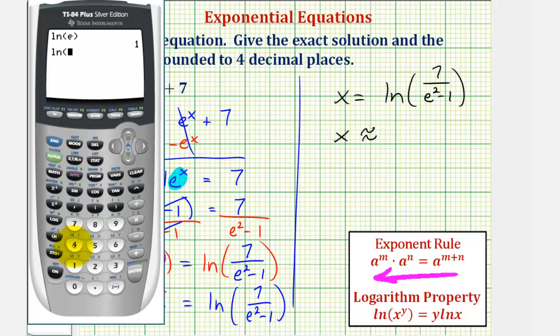We have natural log of 7 divided by, and we do want to put the denominator in a set of parentheses. So we'll have an open parenthesis, e squared. For e squared, we can press second natural log, which brings up e raised to the power of 2, close parenthesis, minus 1, close parenthesis for the denominator, another close parenthesis for the natural log, and enter.